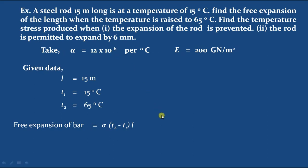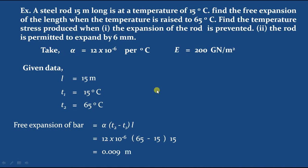Free expansion formula is alpha into temperature change into length. Substituting values: 12 into 10 power minus 6, into (65 minus 15), into 15 meters. Solving this gives 0.009 meters. Since the length was in meters, the value is in meters, which we convert to 9 mm by multiplying by 1000. So expansion of the bar is 9 mm.